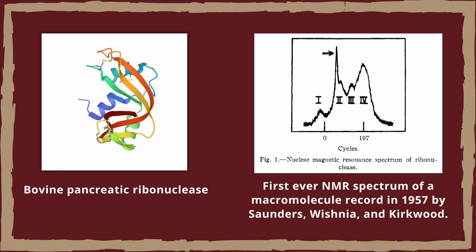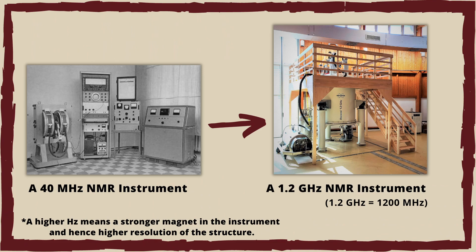Bovine pancreatic ribonuclease was the first protein whose NMR spectrum was recorded in 1957 by scientists Saunders, Vishnia and Kirkwood. From using a simple 40 MHz instrument to a very powerful 1.2 GHz instrument, as of 2022, the usage of NMR spectroscopy in structural biology has evolved.